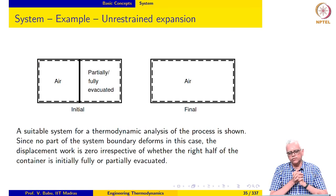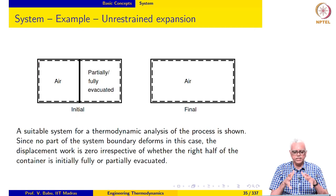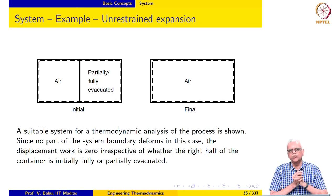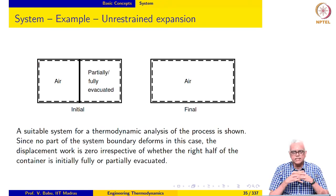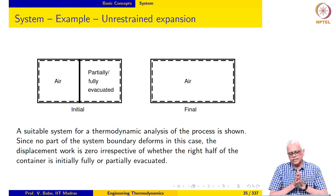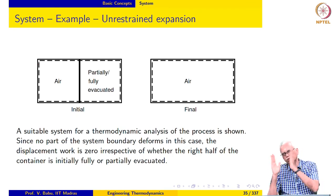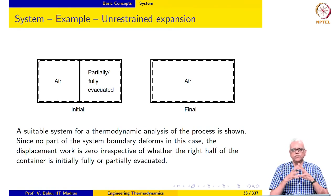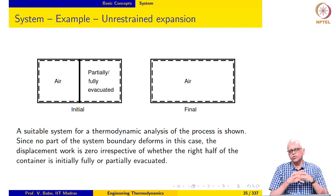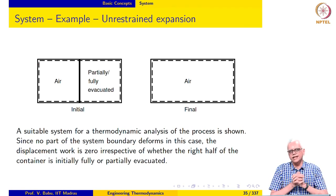This concludes our discussion of the thermodynamic system. What seemed like a very simple concept — the system — is actually not so simple once you look at subtle aspects of what is required to define one. You need to go through the physics of the entire problem, understand what is required, and then define a system appropriately. In some cases you need to know the final state before you can define the system. System analysis requires a lot of thought upfront, but once an appropriate system is defined, the analysis becomes simple because that upfront thought is already done.